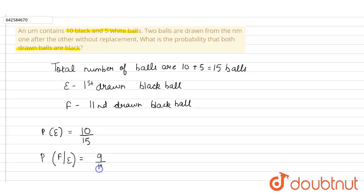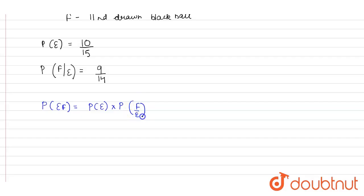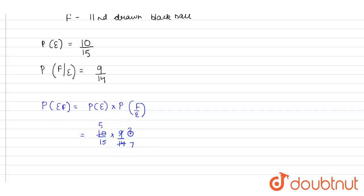The probability of event F — the second ball being black given that the first ball drawn is already black — would be 9 upon 14. Now the probability of both events E and F is P(E) multiplied by P(F|E), which is 10 by 15 into 9 by 14. Simplifying: the answer is 3 by 7.